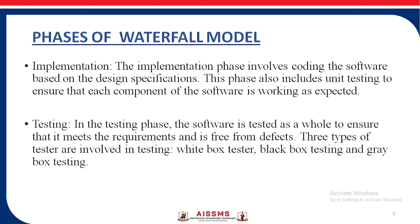Black box testing is also known as system and function testing, and is done by the tester. The overall functionality gets checked in this type. Grey box testing is a combination of white box testing and black box testing, and the tester is involved in this kind of testing. To perform grey box testing, the tester should have programming knowledge. Whenever the final software is handed over to the tester, the tester checks its functionality, and if any fault is found in the output or function, the tester does not give it back to the developer but tries to solve it himself.